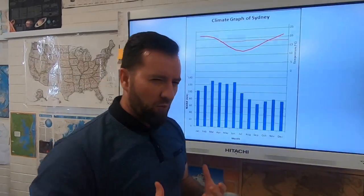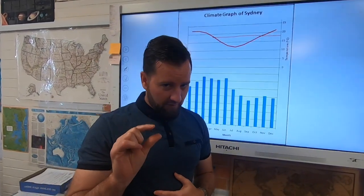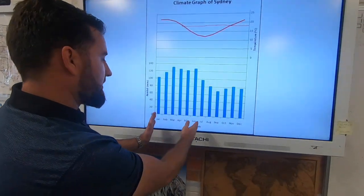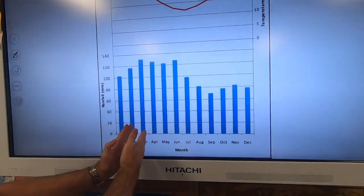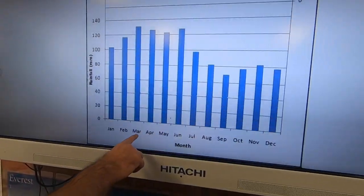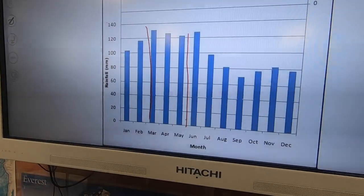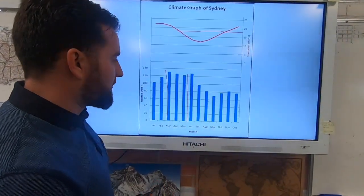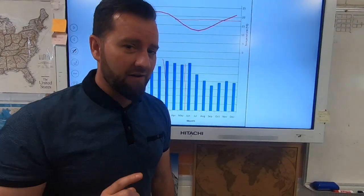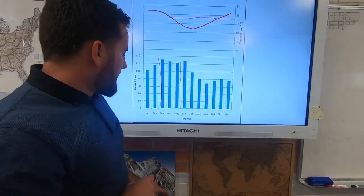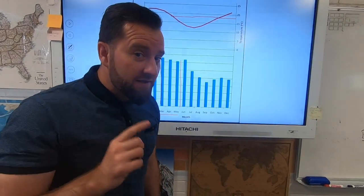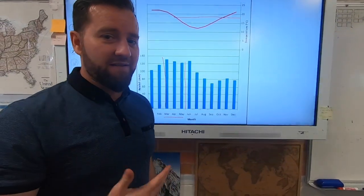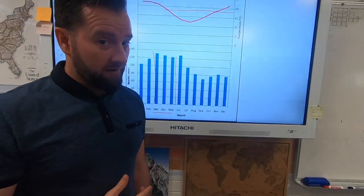Secondly, you might get asked about a season — like which season has the highest or lowest rainfall. It's pretty easy, but there's a trick that messes some people up. December, January, February is summer in the Southern Hemisphere — and March, April, May is autumn, which is clearly the season with the most rainfall here. However, here's the trick: if this climate graph was from a place in the Northern Hemisphere, March, April, May wouldn't be autumn — it would be spring. So you have to make sure you know which hemisphere you're in if you get asked a season question. Very important.